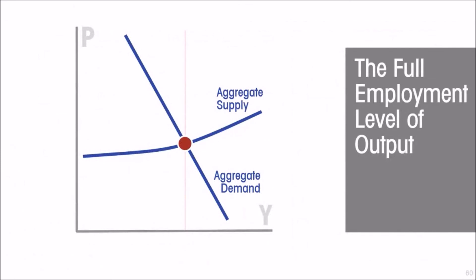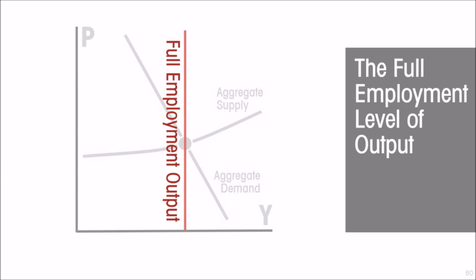Since, in the face of demand shocks or supply shocks — and even a worldwide pandemic — economies seem to revert in the long run to their full employment levels of output, it does raise the question: what determines where that full employment level of output is, and how can we get it to increase? We're talking here about fluctuations around the trend or full employment level of output. If we want to talk about what causes the full employment level of output to increase over time — the economy's capacity to produce to increase over time — then that is the subject of economic growth.